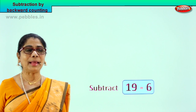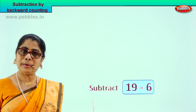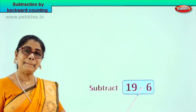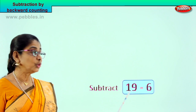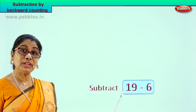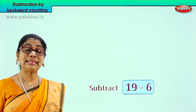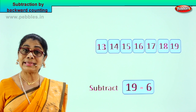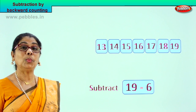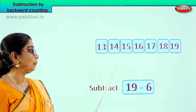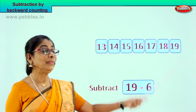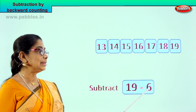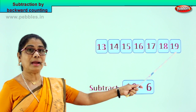Look, let's look at our problem. What is our problem? The subtraction problem is 19 minus 6. So you will be given 19 numbers, you take 6 steps backward. Count 6 steps from 19 — that will get you to the correct answer. So you have 19 here and we are going to go backward counting. 6 steps only. Let's start.